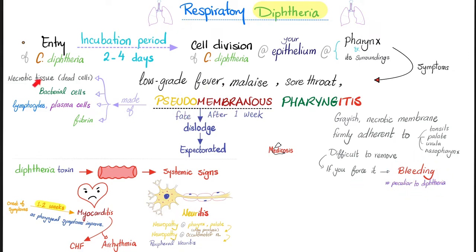The pseudomembrane is made of necrotic cells, bacterial cells, inflammatory cells, and fibrin. When the toxin spreads to the blood, you get systemic signs and symptoms: myocarditis and neuritis. Myocarditis starts one to two weeks from onset of symptoms, and gets worse as the pharyngeal symptoms are improving. After myocarditis, the heart muscles can fail — leading to heart failure — and conduct poorly, leading to arrhythmia.